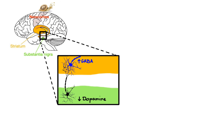These same dopaminergic neurons also exert inhibitory effects on the excitatory cholinergic neurons in the striatum. Without sufficient levels of dopamine, the production of acetylcholine is increased, which triggers a chain of abnormal signaling leading to impaired mobility.